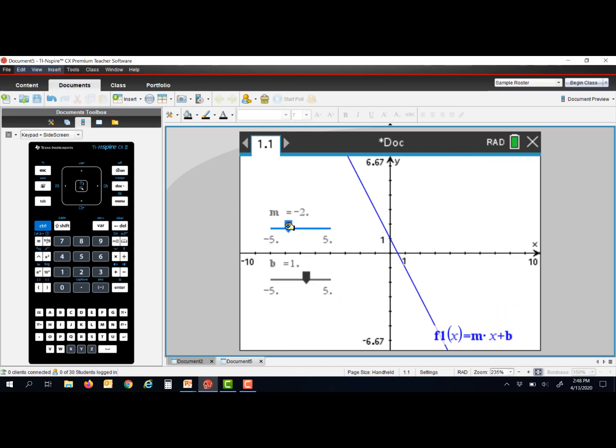And notice now I can grab and drag this slider button and observe how those changes affect just the slope or the variable m. Or if I want to, I can come and grab and drag the b slider button and see how that impacts the y-intercept.